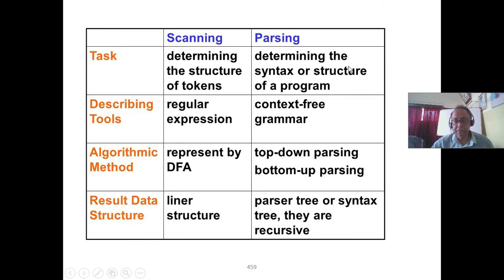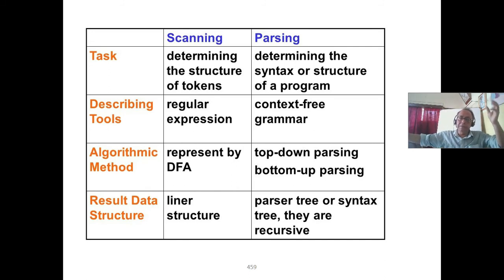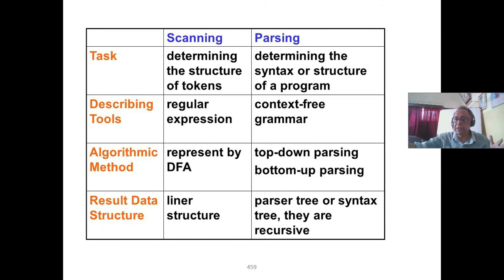This is the lexical analysis stage. The parsing stage or syntax analysis determines the structure of tokens. Regular expressions represented by DFA — this is linear structure parsing. Determining the syntax is the toughest area, and this is context-free grammar — more specifically deterministic context-free grammar, and more specifically deterministic context-free grammar without ambiguity. Top-down parsing means starting from the start symbol, taking rules and trying to reach the terminals by always expanding the leftmost variable.